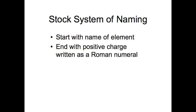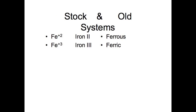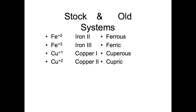If you use the newer system, the stock system, you start with the name of the element. You end with the positive charge written as a Roman numeral in parentheses. So let's look at our example, iron. Iron plus 2 would be iron 2 with the stock system, ferrous. Iron 3 would be ferric. Copper 1 would be cuprous. Copper 2, cupric. Lead plus 2 would be lead 2 or plumbous. Lead 4 or plumbic.